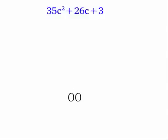and we're looking for the factors of 35, which are 7 and 5. I can't think of anything else, so 7c and 5c,